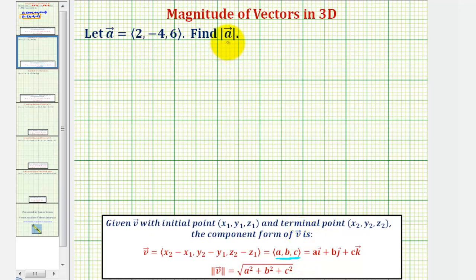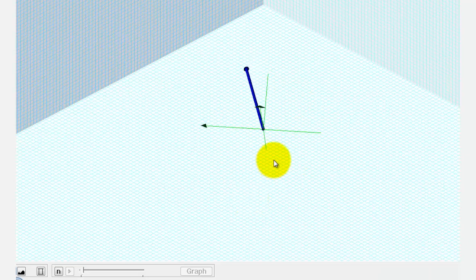Before we find the magnitude of vector a, though, let's take a look at the graph of vector a in space. Again, because it's in component form, the initial point will be at the origin. The terminal point will be at the point (2, -4, 6). Here's the graph of vector a.